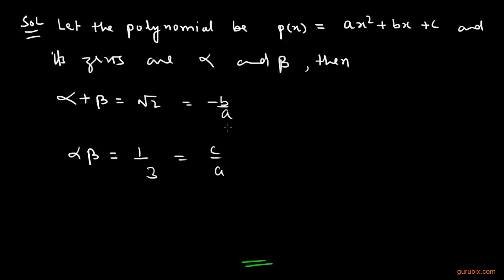And now we calculate the values of a, b and c by using these values. First of all, we shall make the denominator equal like this, and if we compare these equations, the value of a is 3. If a is equal to 3, therefore b is equal to minus 3 root 2 and c is equal to 1.